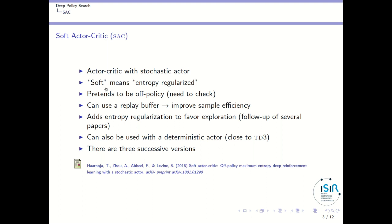One point is that soft actor-critic pretends to be an off-policy algorithm. It can use a replay buffer, which is an important criterion, but we still need to check that it's really off-policy — because with DDPG, we have seen that if the behavior policy is too far away from the current policy, then DDPG might diverge. This kind of experimental confirmation needs to be performed on soft actor-critic to make sure it also converges whatever the behavior policy. Soft actor-critic uses a replay buffer, which makes it very similar to DDPG and TD3, and improves the sample efficiency of the algorithm.